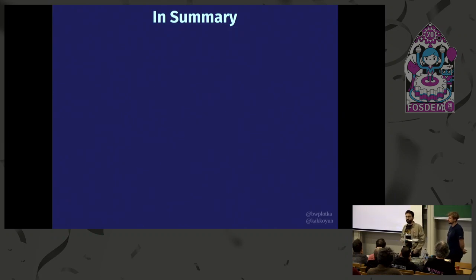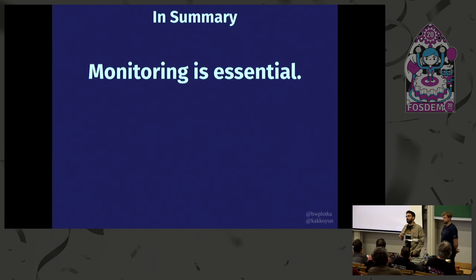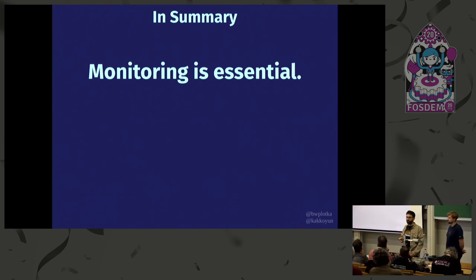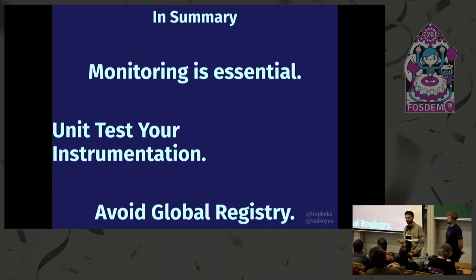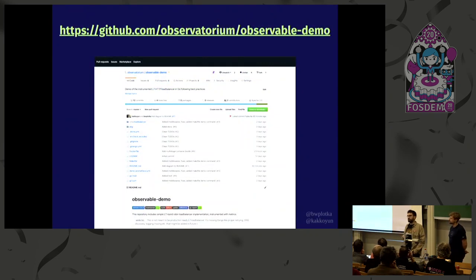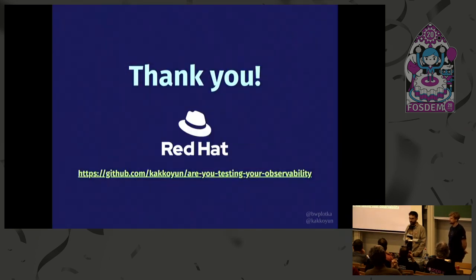In summary: whatever you do, observe your applications — observation is essential, not optional. Determine your service-level objectives, write your alerts, build your graphs, and use them. Since you now depend on your metrics and rely on them for reliability, test them as you test your business logic. And avoid global state — make your life easier. All the code you've seen in this load balancer demo is available as a working example if you want to dig in and check more. Thank you for listening — and we are hiring.